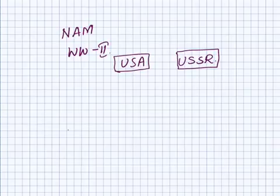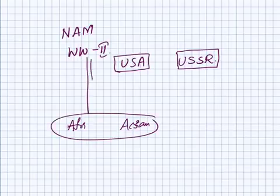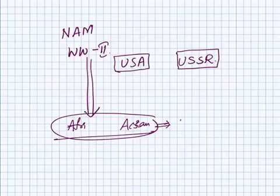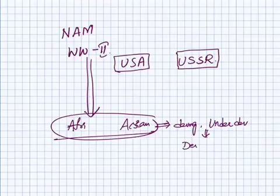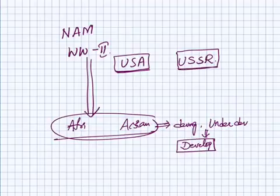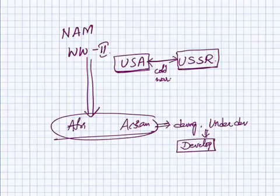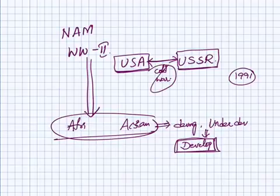Countries in the African and Asian continents gained independence mostly after World War II. They were developing or underdeveloped countries whose priority was development — to provide basic services and goods to their citizens. If they joined either the USA or USSR bloc, they risked being drawn into the Cold War, which was a proxy war between the two powers before 1991. So these countries did not want to enter that Cold War scenario.